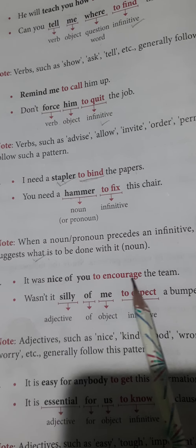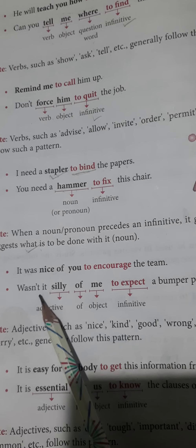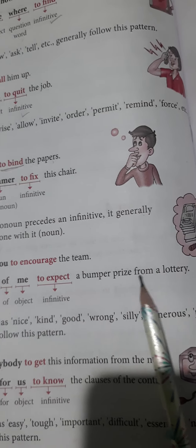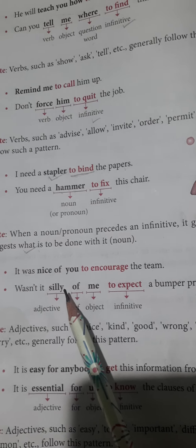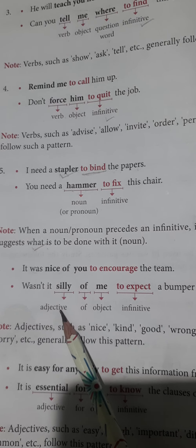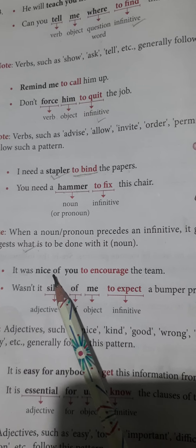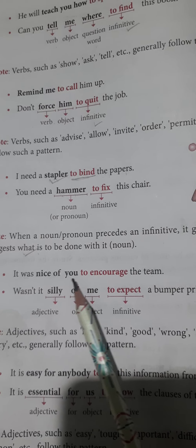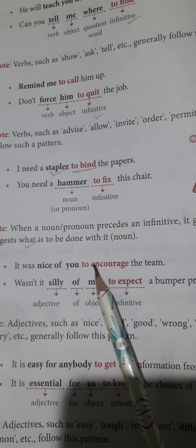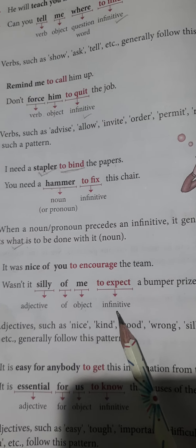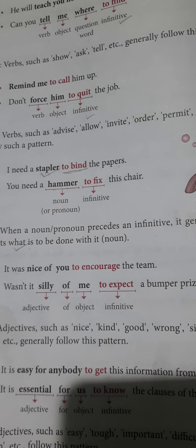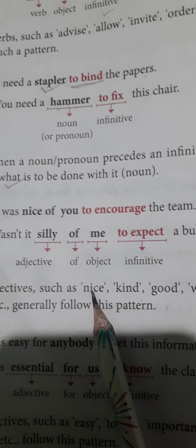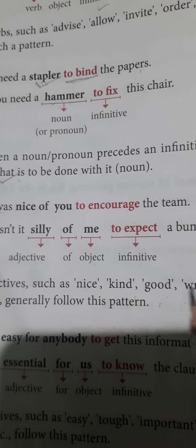'It was nice of you to encourage the team.' 'Wasn't it silly of me to expect a bumper prize from a lottery?' Here 'nice' and 'silly' are working as adjectives; 'of' is a preposition; 'you' and 'me' are objects; and 'to encourage' and 'to expect' are working as infinitives. For example, we can say: 'It's nice of you.'